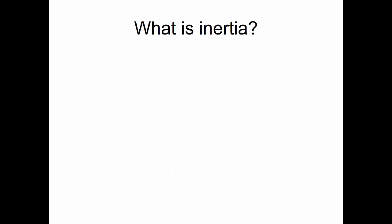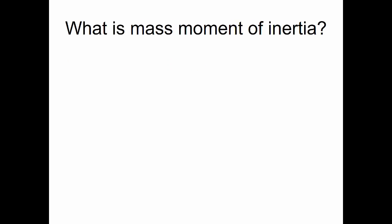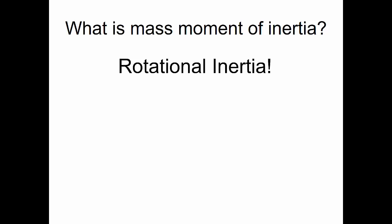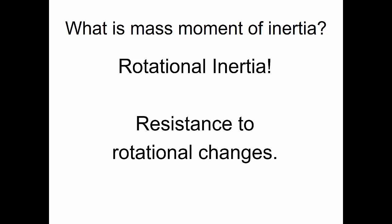So what is inertia? Inertia is a resistance to change. An object in motion wants to stay in motion unless it's acted on by another force. So what is the mass moment of inertia? A moment implies rotation, and inertia is resistance to change. So a mass moment of inertia would be rotational inertia, or resistance to rotational changes — specifically, a mass's resistance to rotational changes.